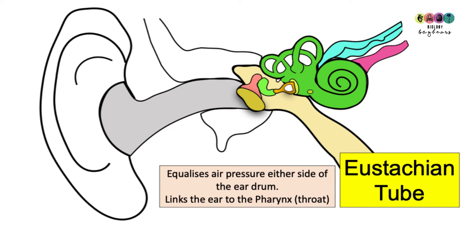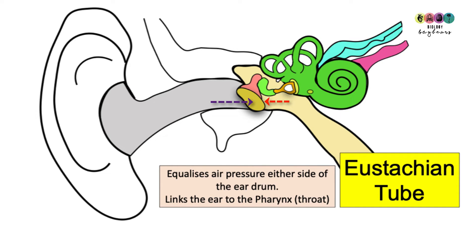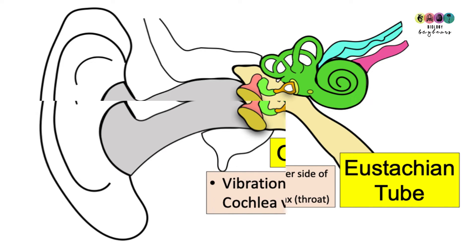Your middle ear is connected to your throat — your pharynx — by the Eustachian tube, and the purpose of this is to equalize air pressure either side of the eardrum. Without this, the eardrum would perforate or burst.